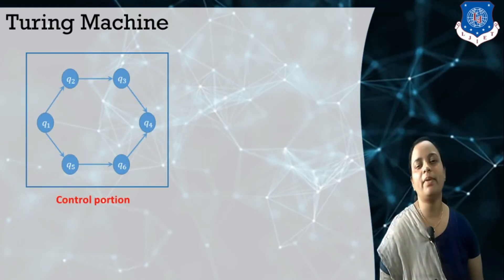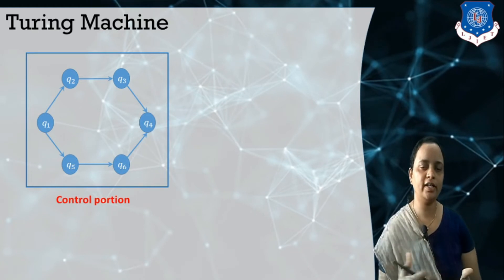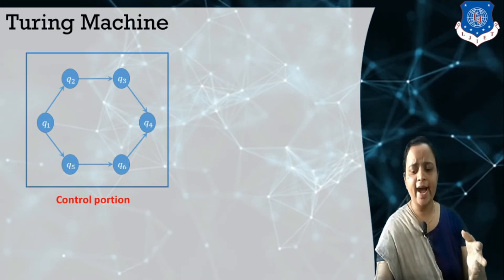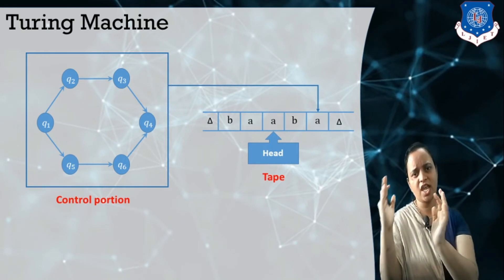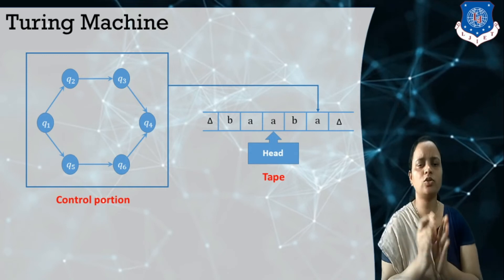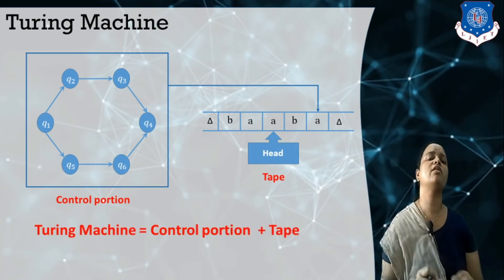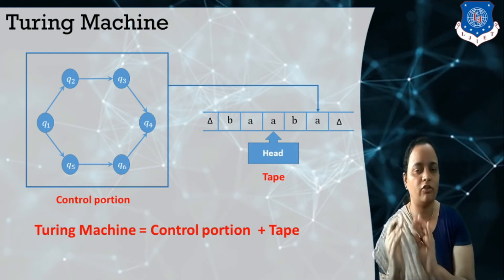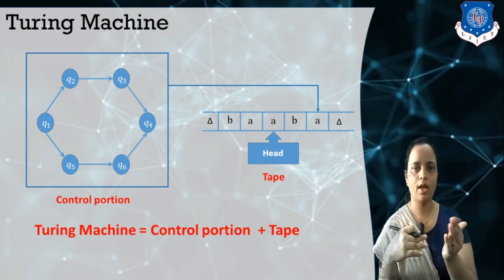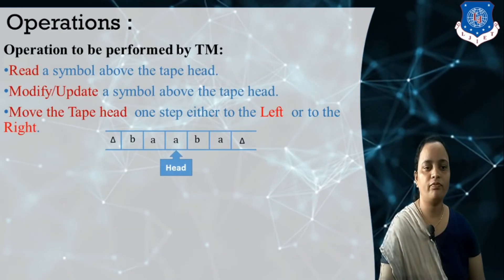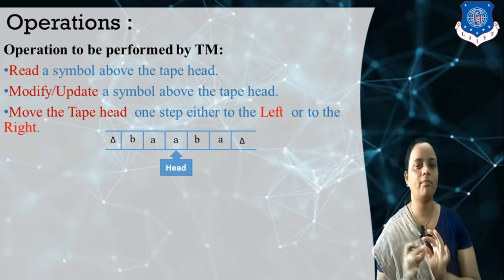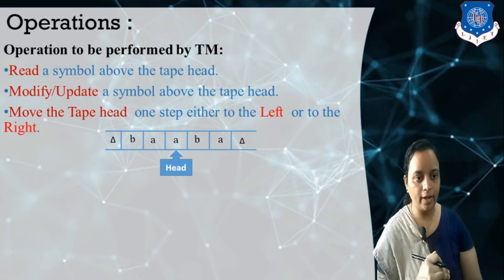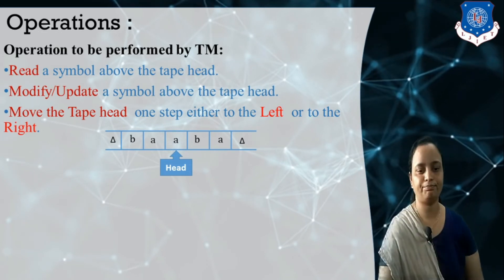What are the main components the Turing machine contains? The Turing machine contains one control portion, which holds the number of states and also the tape symbols. By reading the symbols and performing the operations, it makes decisions. So we can say the Turing machine is equivalent to the control portion plus the tape. The tape performs three operations: read the symbol above the tape head, update the symbol above the tape head, and move the tape head either left or right — one step.